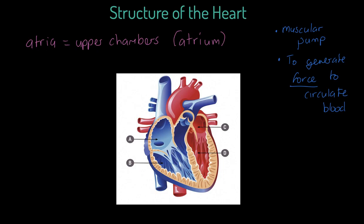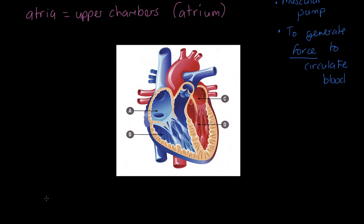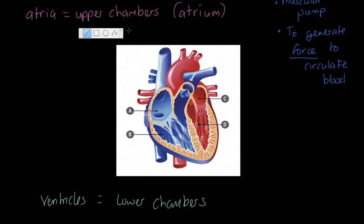Secondly, we have ventricles, which are our lower chambers. One is called a ventricle. So to summarize what we can see on the diagram: we've got our ventricles — the lower chambers — and we've got our atria — the upper chambers.